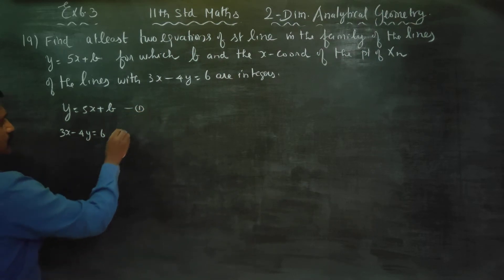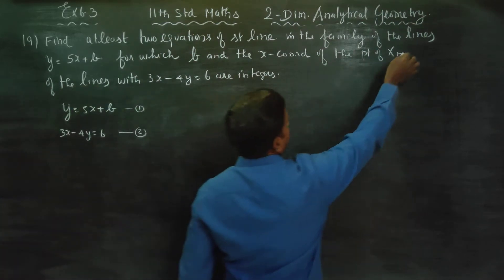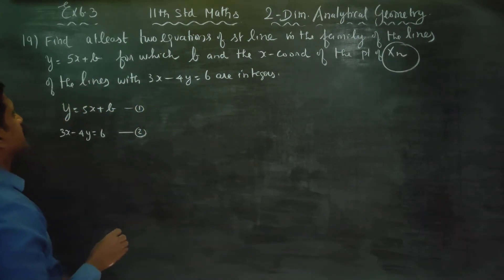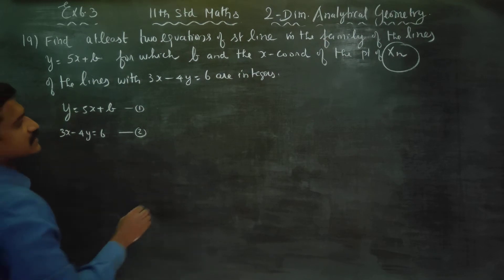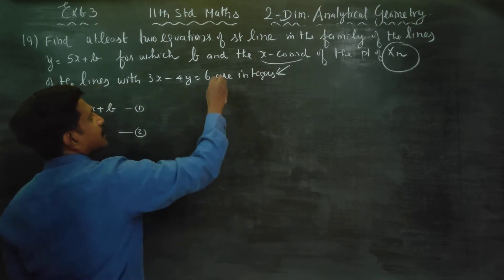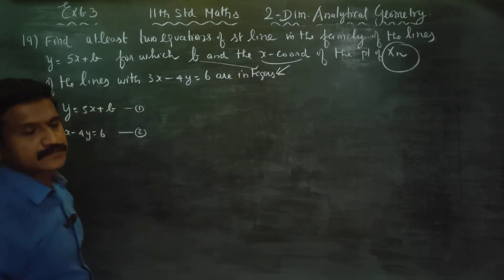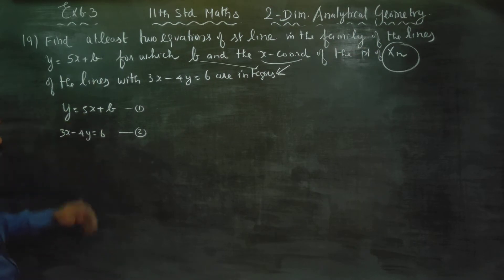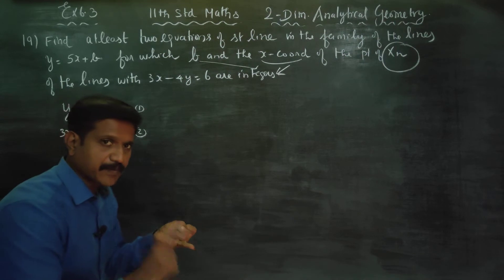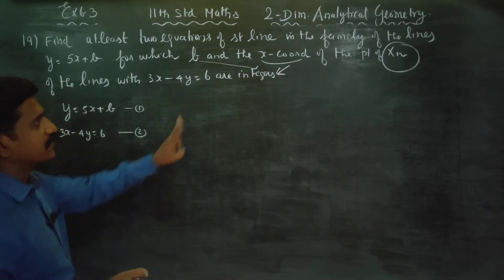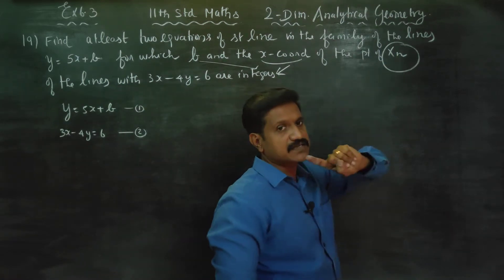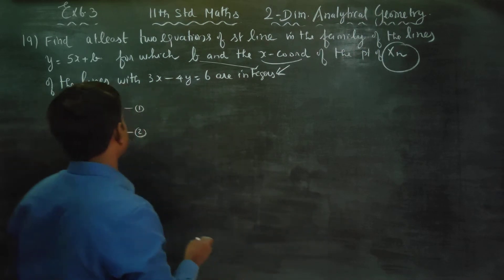Equation 1 is Line 1, equation 2 is Line 2. When they intersect, the main condition is that the x-coordinate must be an integer, and b must also be an integer. So we solve both equations together to find where x is an integer and b is an integer — that's how we find the two required equations. Since they intersect, we must solve them.